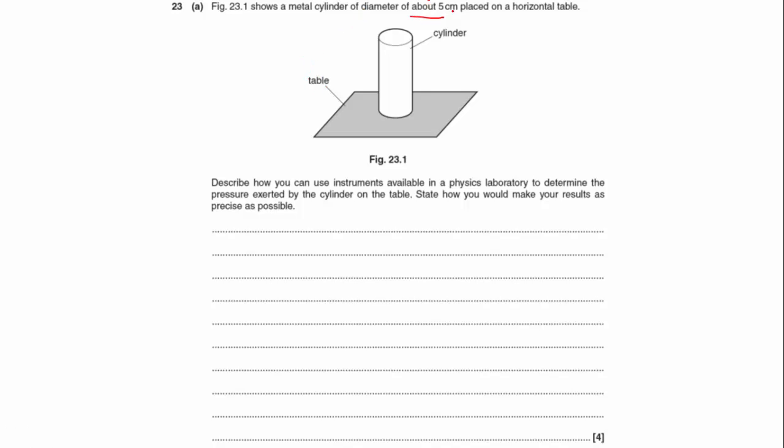The thing you've got to realize with this is they're telling you it's only about 5 centimeters just to give you a sense of scale, so you can work out what instruments you would need. With these experiments where you're describing, I would always put three columns: analysis over on the right, measurements, and equipment.